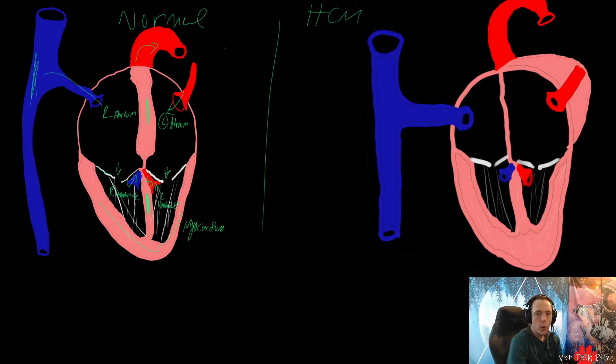HCM is classified as an increase in cardiac mass due to a hypertrophy, which just means thickened, non-dilated left ventricle in the absence of any other cause of ventricular hypertrophy, which we're not really going to get into.